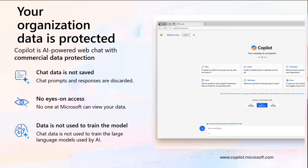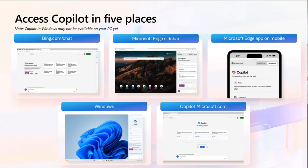Information from the web is used to power Copilot, but again, it's not stored and not used for training. You can access Copilot in several places today: via bing.com, via the Edge browser, via the mobile app on Edge, on Windows, and also at copilot.microsoft.com — though not all of these may be available to everyone today.